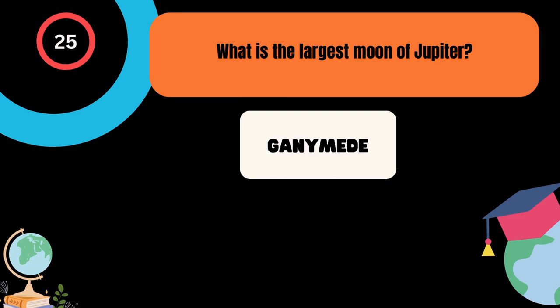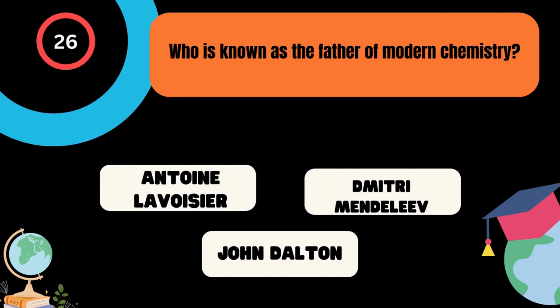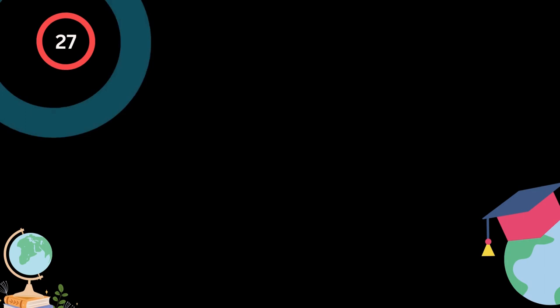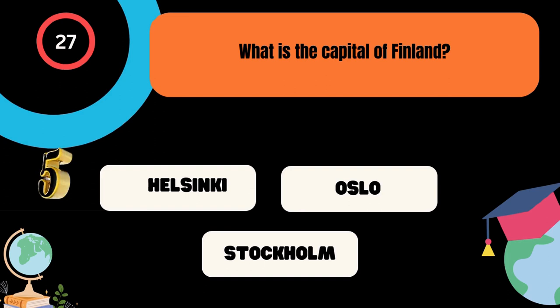Who is known as the father of modern chemistry? A. Antoine Lavoisier, B. Dmitry Mendeleev, C. John Dalton. The correct answer is Antoine Lavoisier. What is the capital of Finland? A. Helsinki, B. Oslo, C. Stockholm. And the correct answer is Helsinki.